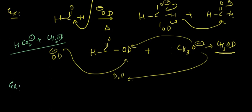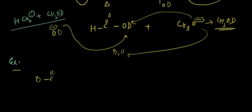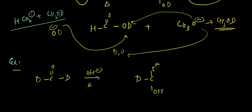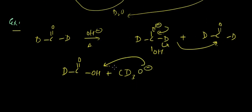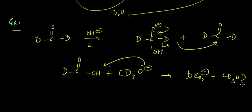Let's look at another example: DC double bond OD reacting in basic medium. In the first step, OH- attaches and we get O- and D. Then DC double bond OD forms a double bond, D- leaves and attacks the other carbon, giving DC double bond O-OH plus CD3O-. Next, O- takes away the H+, giving DCO2- plus CD3OH as the major products.